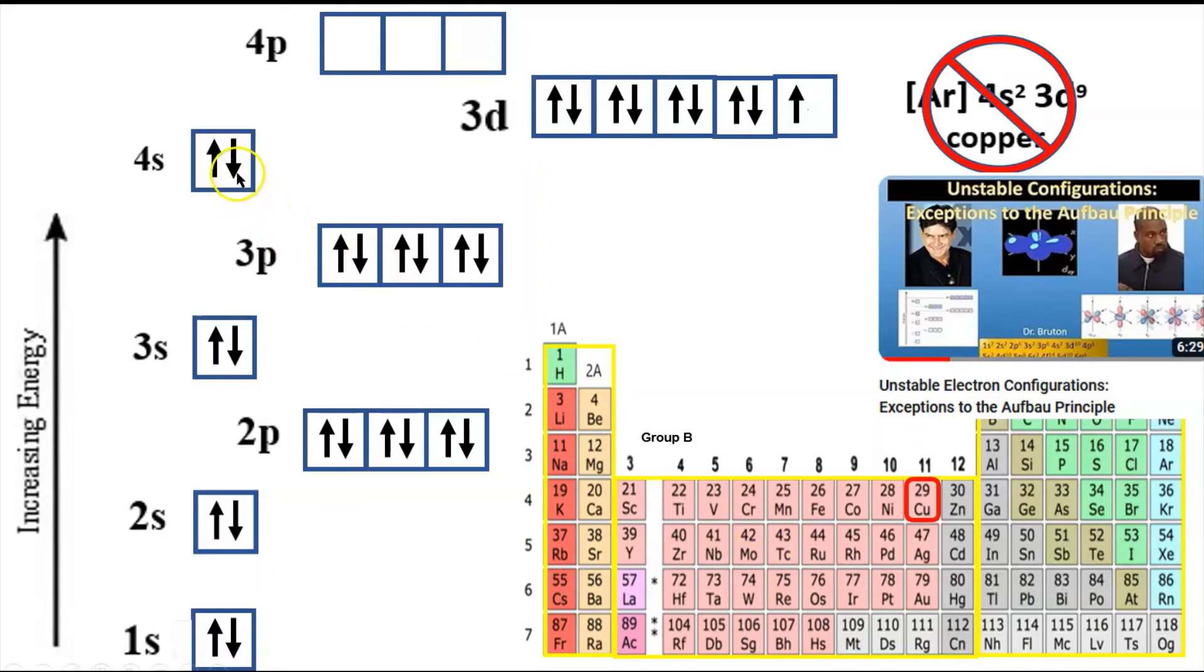What does happen is that an electron from the 4s jumps over to the 3d, so we have a completely filled 3d which is very stable and a half filled 4s which is also stable. The electron configuration ends up being Ar 4s1 3d10.